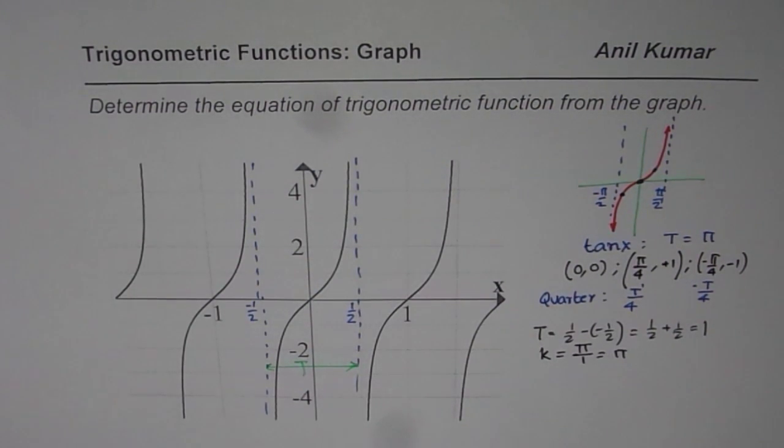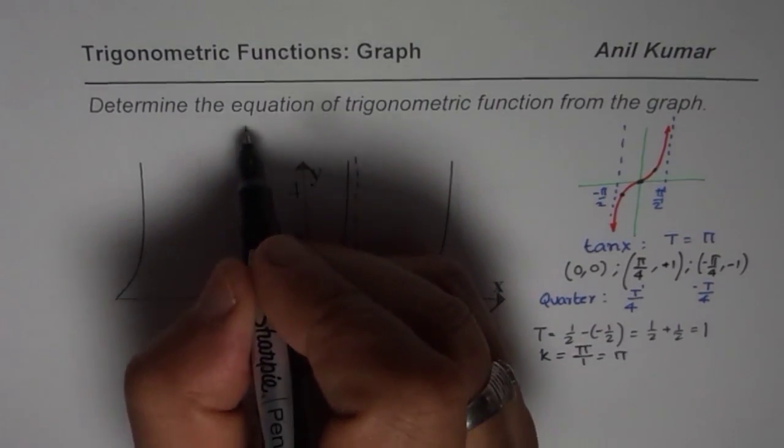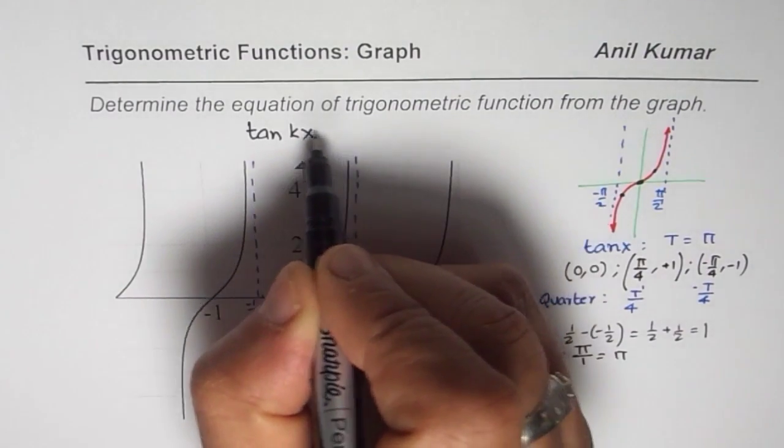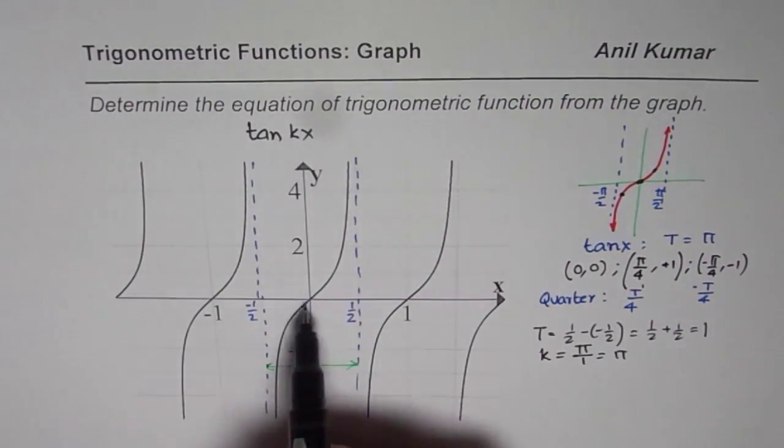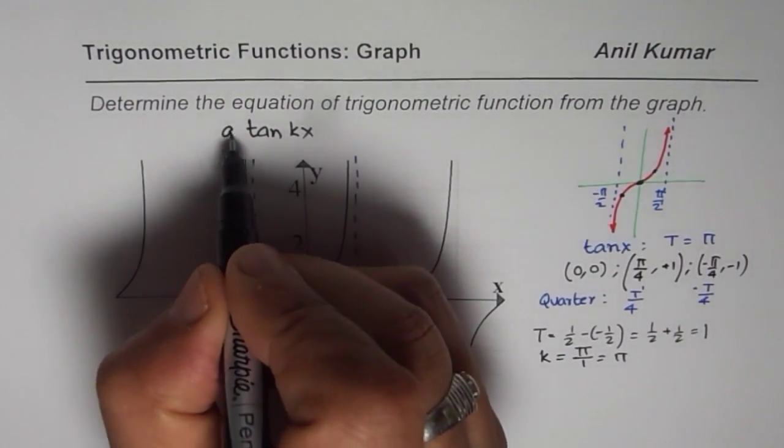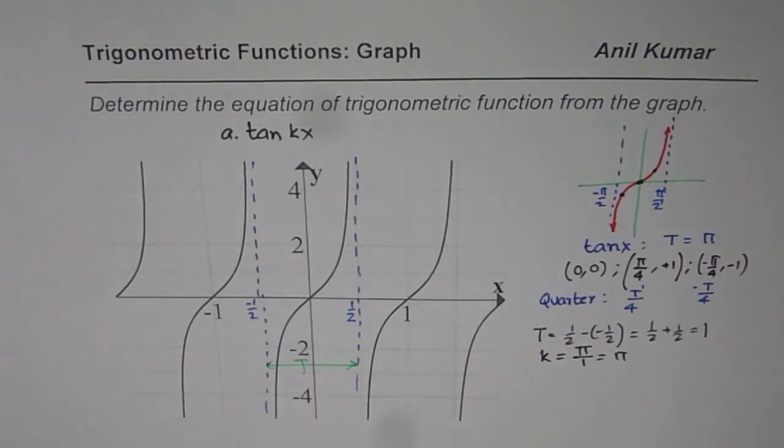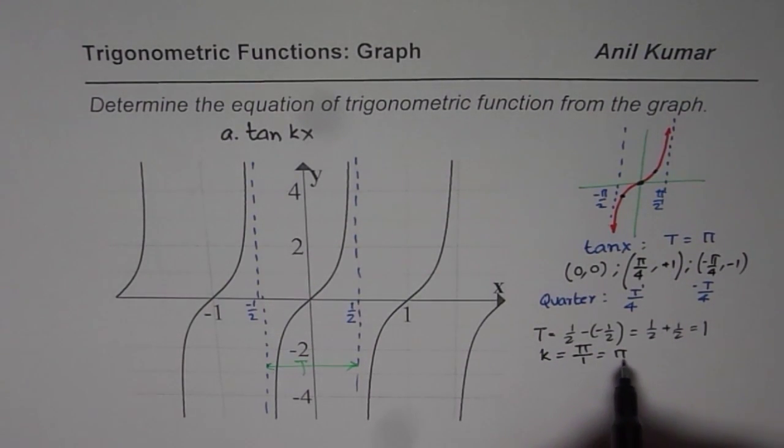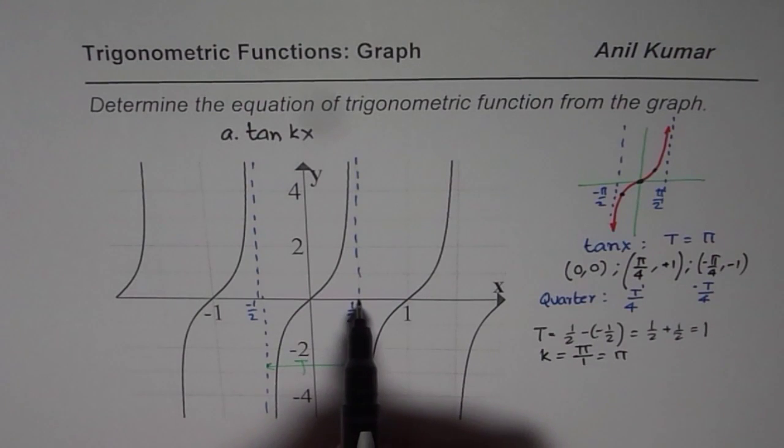If t is 1, then the k value for tan should be π/1 which is π. You understand? K value. We are trying to write the equation in terms of tan of kx. It could be tan of k - we know it is not transformed so I am not taking any d value. And it could be a times tan of kx. Now so we get k value which is π, since the time period or it is repeating after one unit of time.